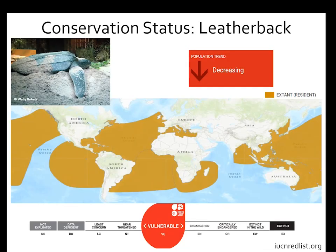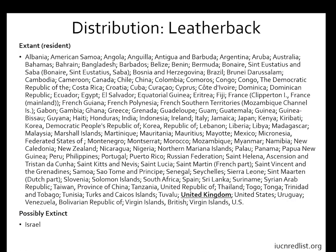The leatherback is classified as Vulnerable on the IUCN Red List, with a decreasing population trend. Their range runs along the equator and extends toward each pole. They visit a wide range of countries, and are possibly extinct in Israel. The United Kingdom is highlighted because leatherbacks can be found in UK waters, typically in summer months, following the jellyfish population boom — jellyfish being their main diet.